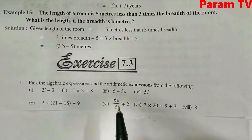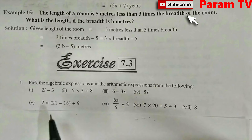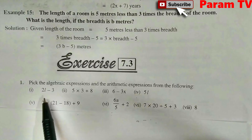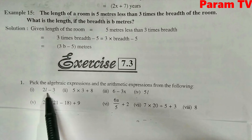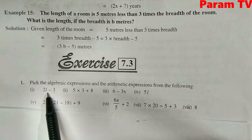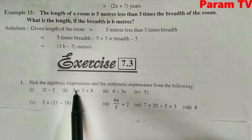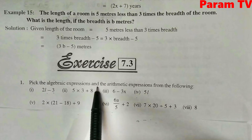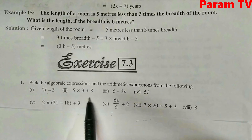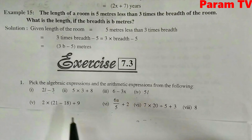That means alphabets like A, B, C, D do not exist in arithmetic expressions. So, see the first example: 2L minus 3. This is an algebraic expression because it has L. Next, 5 into 3 plus 8 — only numbers are involved, so this is an arithmetic expression.